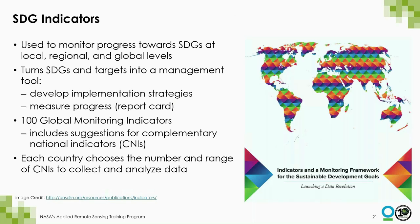To assess the success of SDGs, indicators are used — the backbone of monitoring progress at local, national, regional, and global levels. A sound indicator framework will turn the SDGs and their targets into a management tool to help countries develop implementation strategies, allocate resources, and measure progress. Each level of monitoring requires different types of indicators chosen for each country based on discussions with the National Statistics Office.